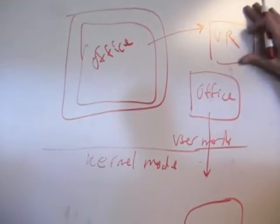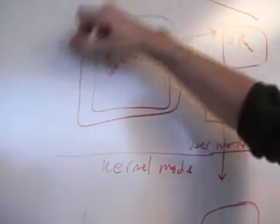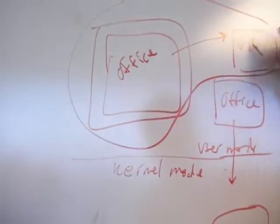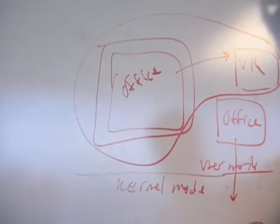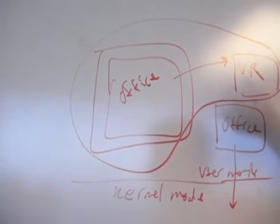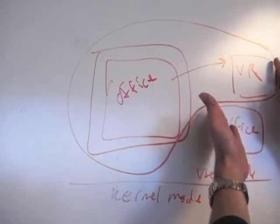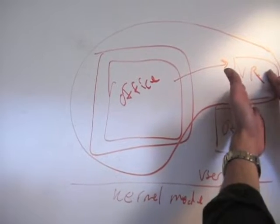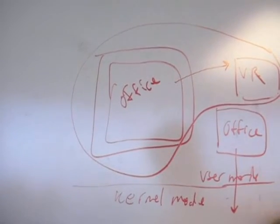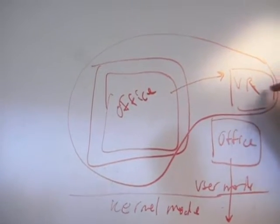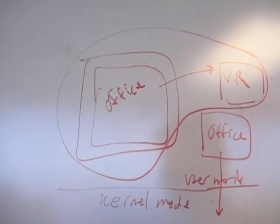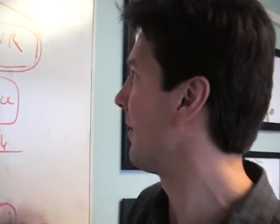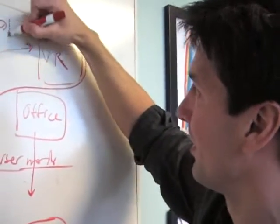This virtual registry is stored off in some well-known place from Softgrid's point of view. So you can basically take this and lift it off the machine and put it on another machine, and now Office's view of the registry is basically this. All of the important stuff for Office is here - all your settings, Office's installation configurations on that virtual registry, and also a virtual file system.